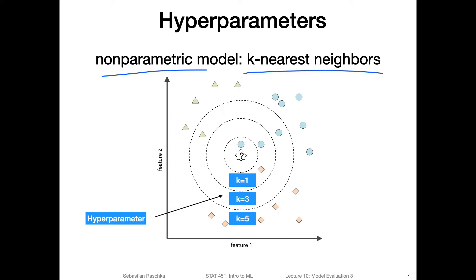What I mean by that is: consider a case where we have a fixed set of features. If I change the dataset — if I have more or less training examples — it will kind of change the structure of the model. In the case of k-nearest neighbors, the parameters of the model are really the training examples. For decision trees, the number of splits really depends on the training examples; we don't specify the structure of the tree beforehand.